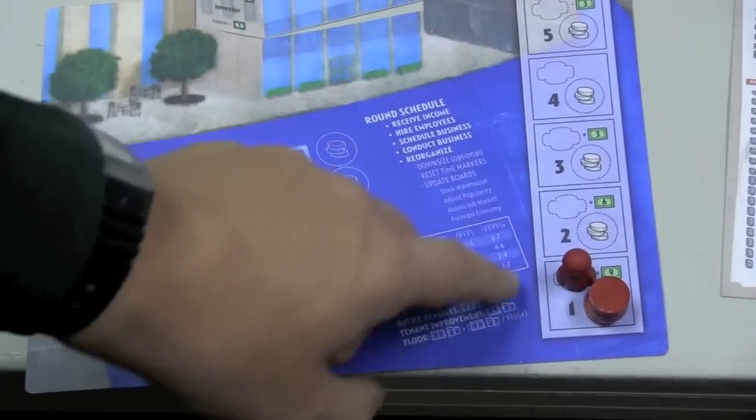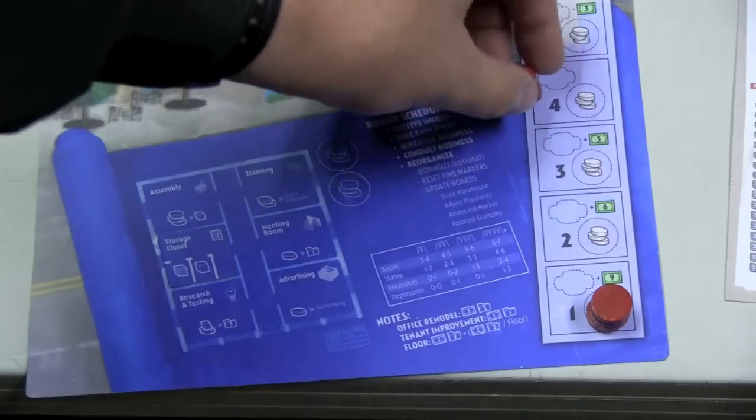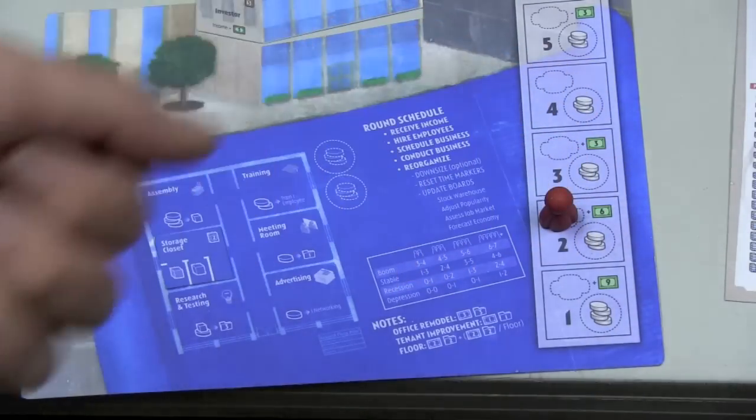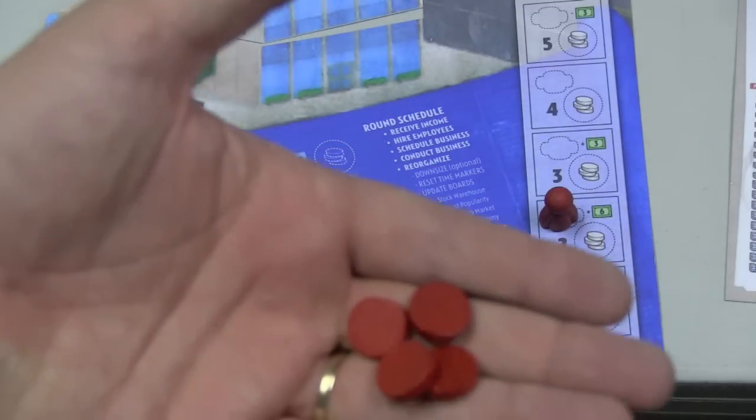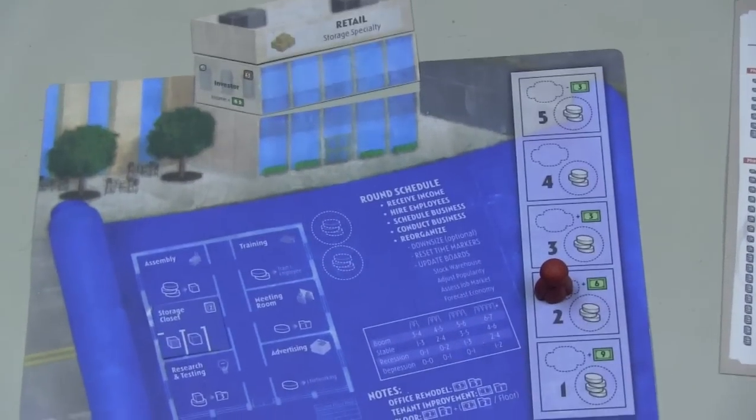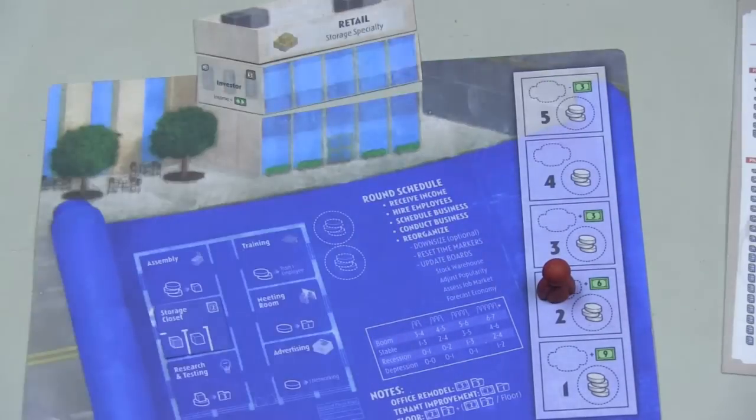Now, over here is an important track, and this shows how many employees you have. At the beginning of the game, it's just you, but you can get more employees. As you get more employees, you're going to get more of these discs. These are time discs that you will use over the course of the game. But you'll get less money. You can see here, with one employee, I will get $9 per turn, but then I have four time discs to work with. If I go up to two employees, I will get three more discs to put out on the board, but I only get $6 per turn. All the way up to, look how many discs you get with five employees, but then you actually lose $3.